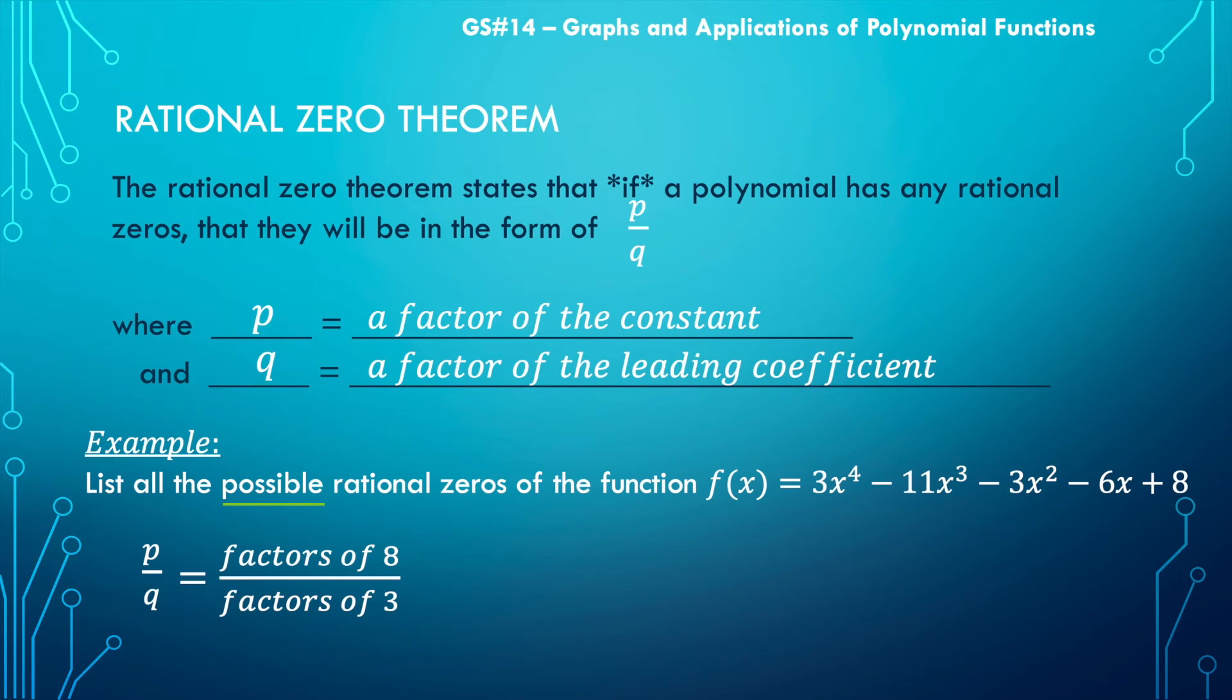So we're going to want to list the factors of eight. It always makes sense to kind of start and do this systematically so we don't miss something. So I always just start with one. One's a factor of eight. Two's a factor of eight. Three is not a factor of eight. But four is a factor of eight, and it matches with the two, which means I just need the match for the one. So one, two, four, and eight are my factors.